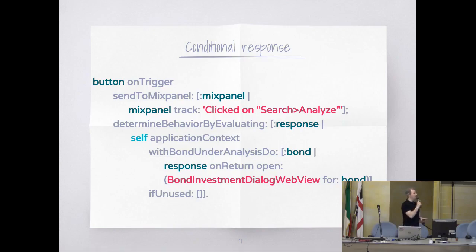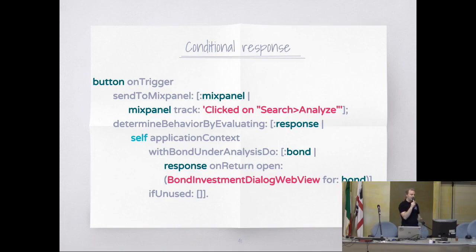This is a tricky one — we have two things. First, send to Mixpanel: it's provided by one of the additional libraries, and when the user clicks the button it uses the Mixpanel integration to track an event — in that case, 'search analytics'. But the interesting part is the second one — until now we were always doing something, but here we want to do different things depending on server state.